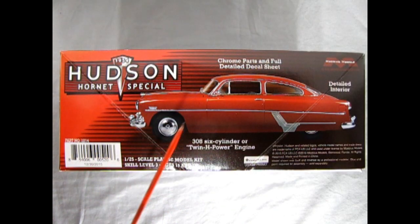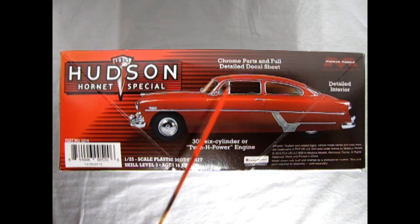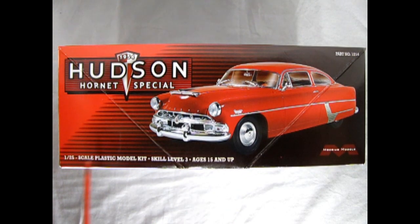The model kit includes chrome plated parts and full detailed decal sheet, detailed interior and a 308 six-cylinder or twin H power engine. This side of the box features a full build of the 1954 Hudson Hornet Special by Mobius Models.